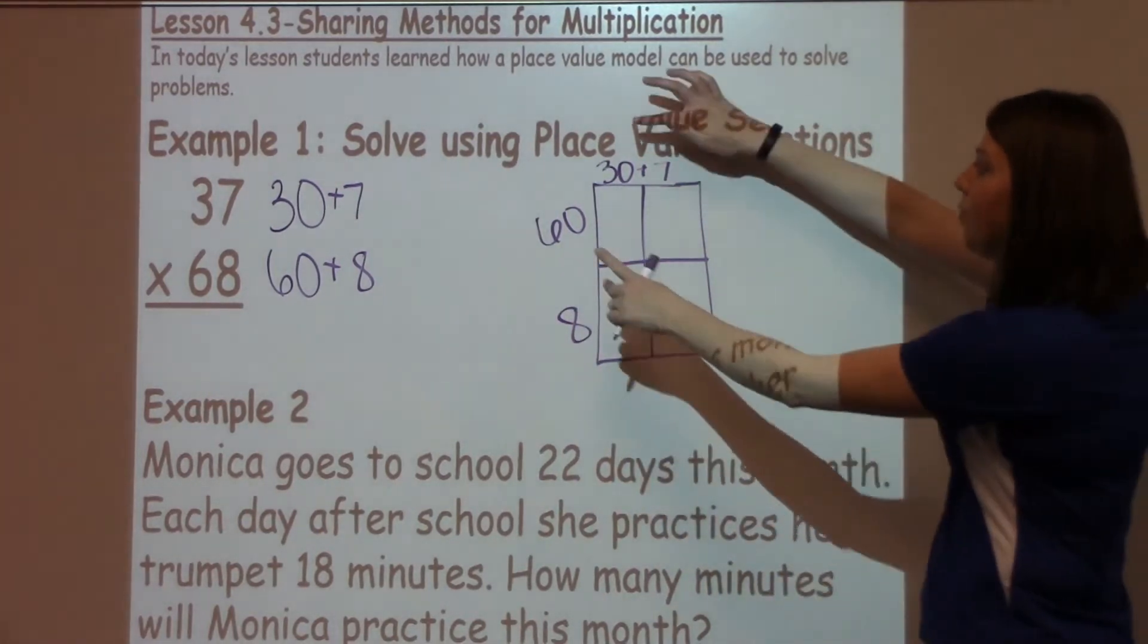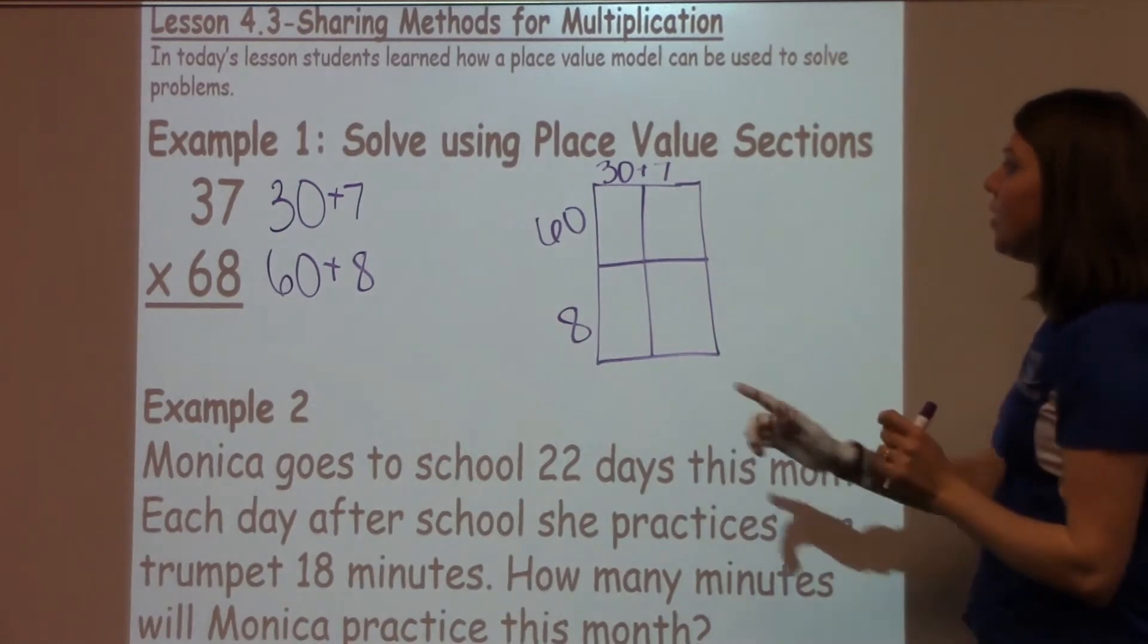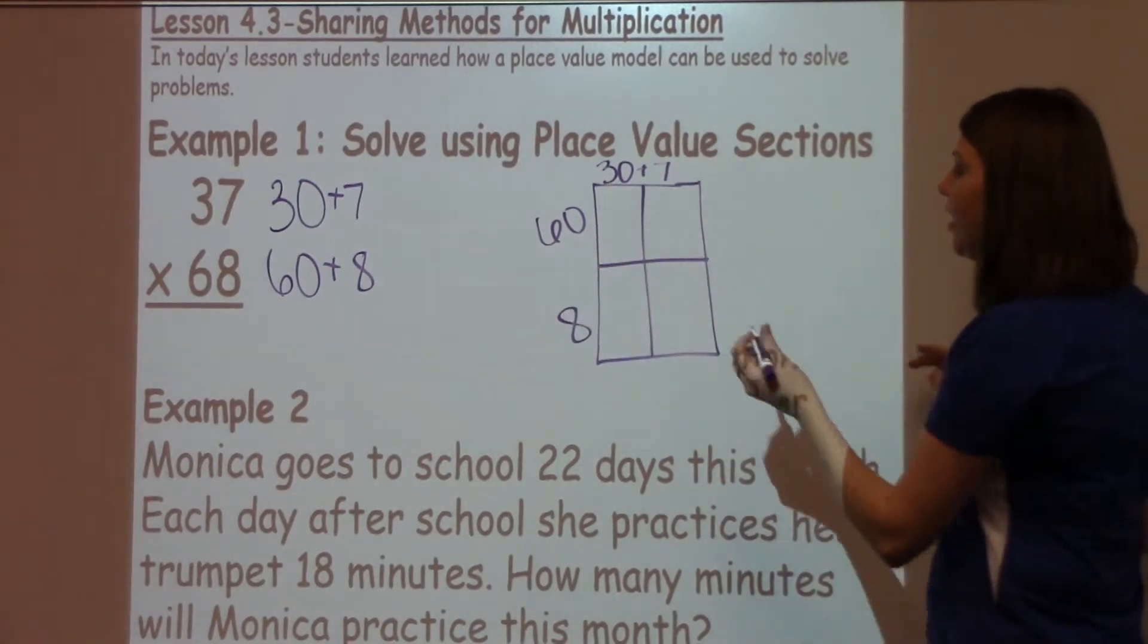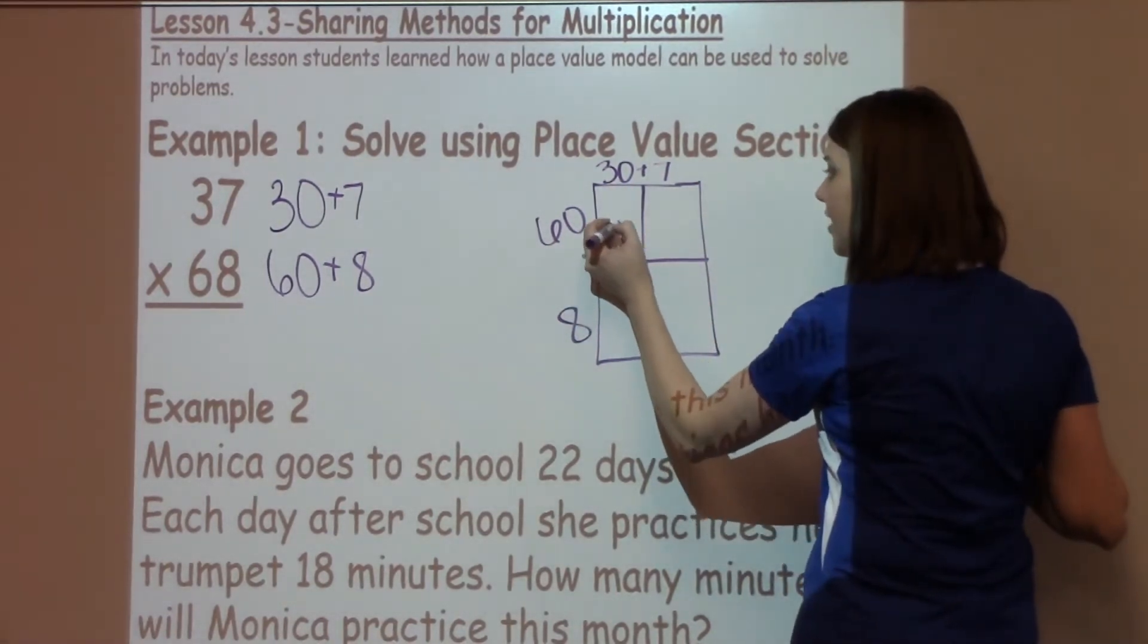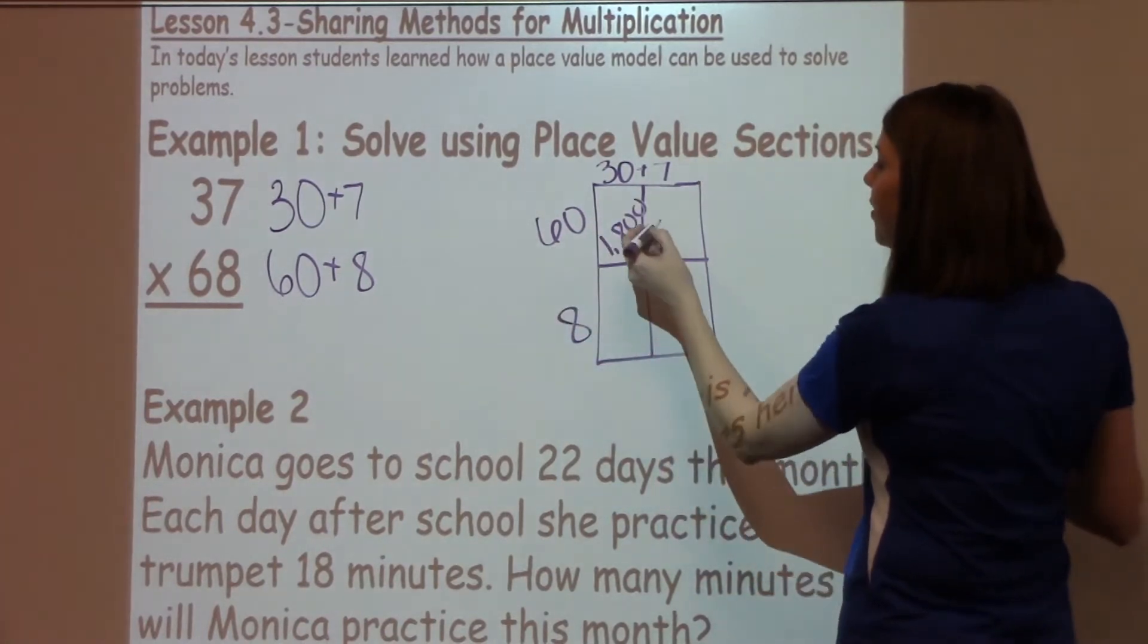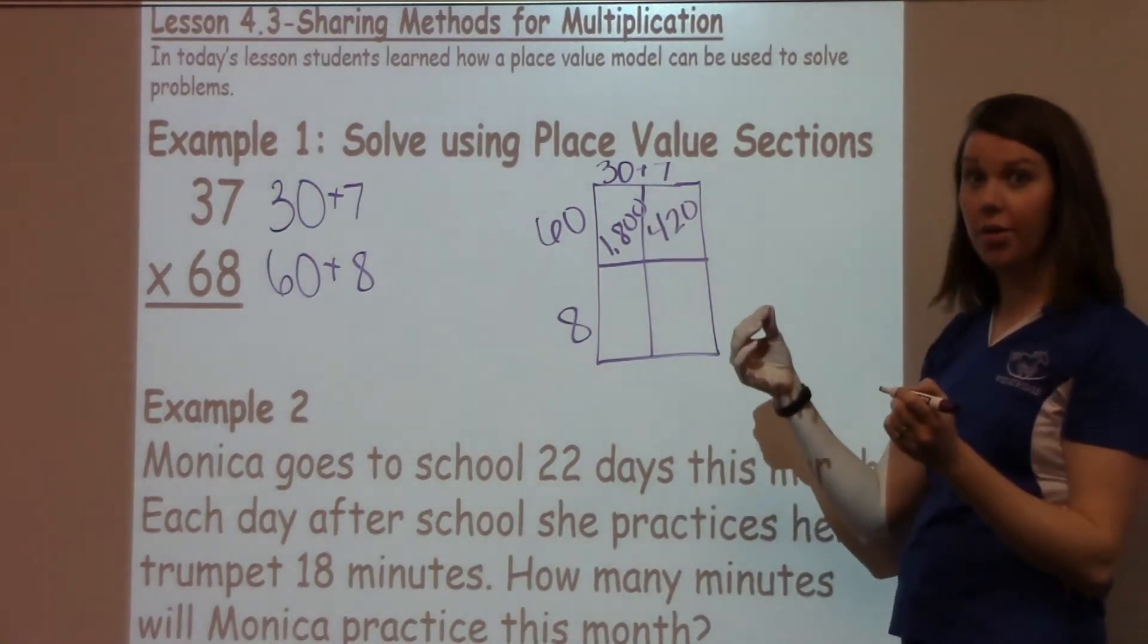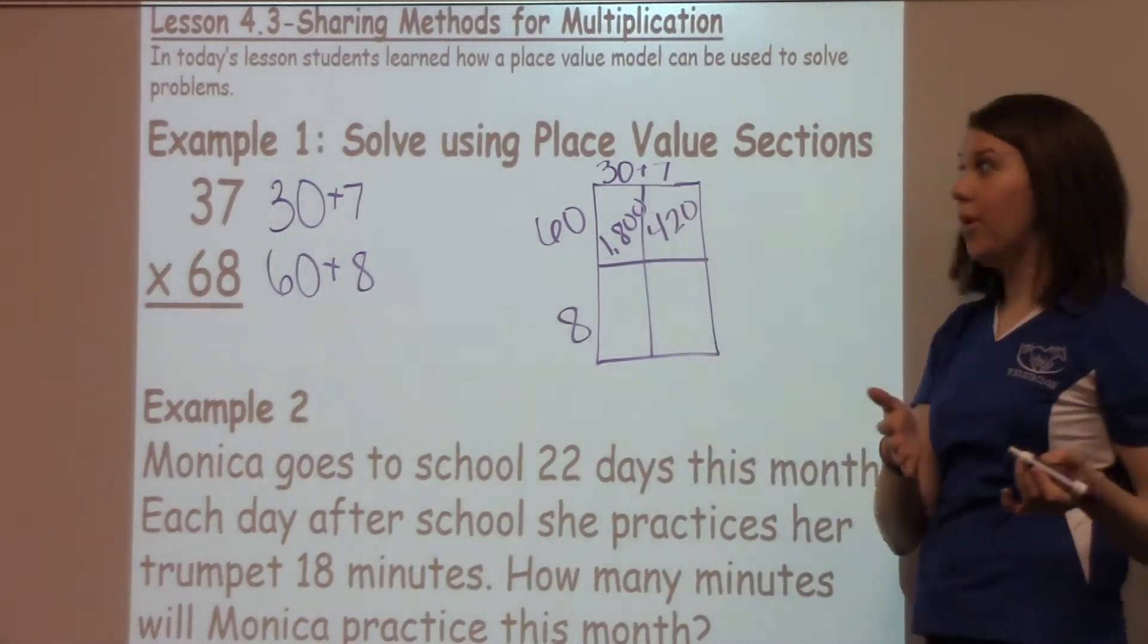Now I'm simply going to multiply these numbers into these boxes. So I have 60 times 30, which is 1,800. I have 7 times 60, which is 420. Using our zeros trick, we're able to do that very quickly, like we talked about in lesson 4.1.